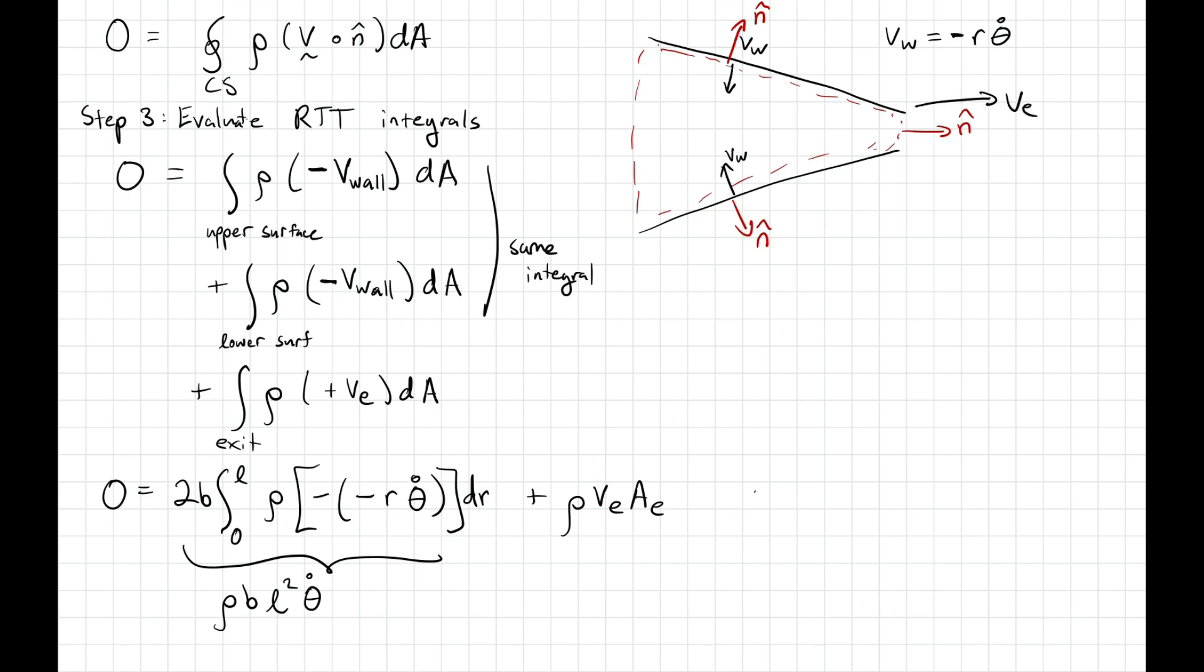So just like the last problem, you can simply invert that to find the exit velocity as B L squared theta dot divided by the area at the exit with a minus sign in front of all of that. And as expected, even though we solved the problem using a different control volume, we did ultimately find the exact same result when we were done.